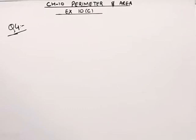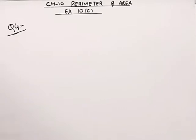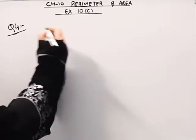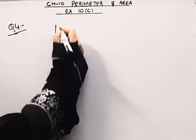Hello everybody, today we will be doing question number 4 from exercise 10C. The question is: a path of 2 meter wide is built along the border and inside a square garden of 16 meters.